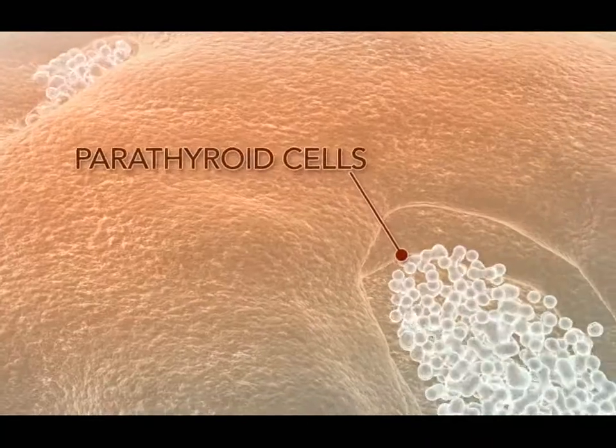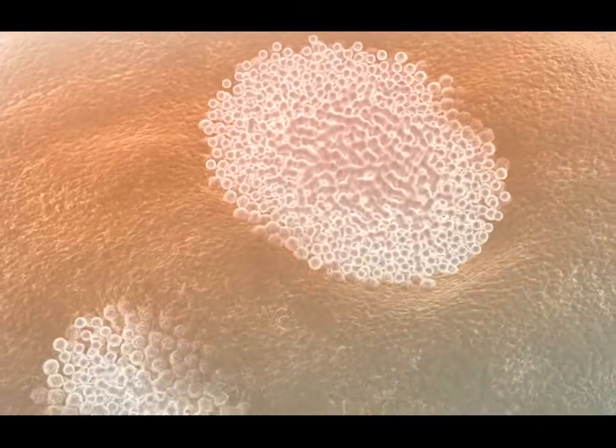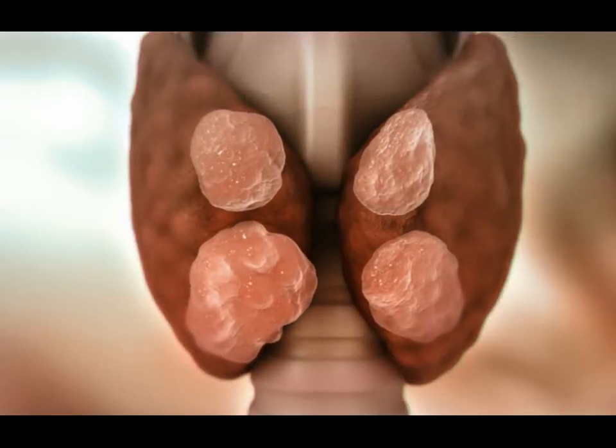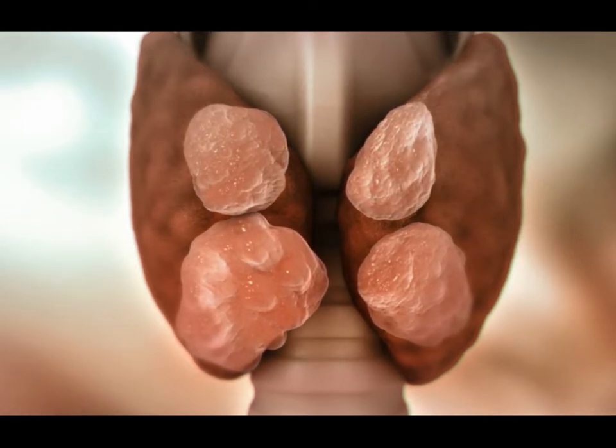Then, when this too is insufficient, the parathyroid glands increase the number of parathyroid cells available to produce and secrete PTH. This process of cellular proliferation is known as parathyroid hyperplasia, which leads to enlargement of the parathyroid glands.